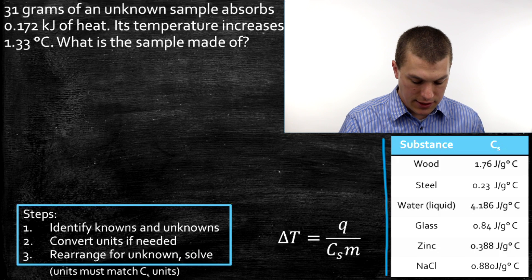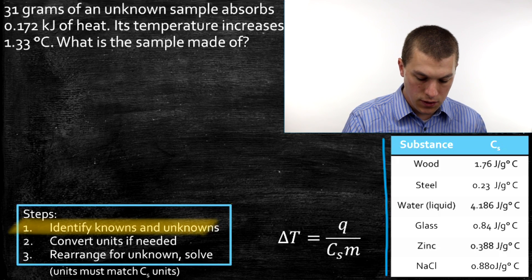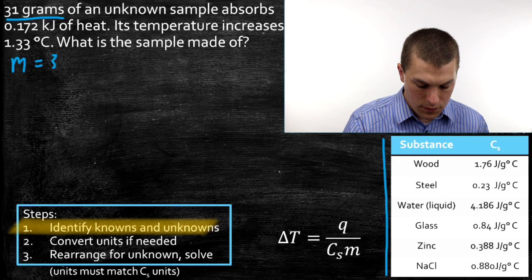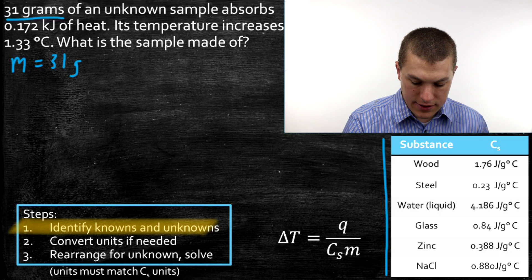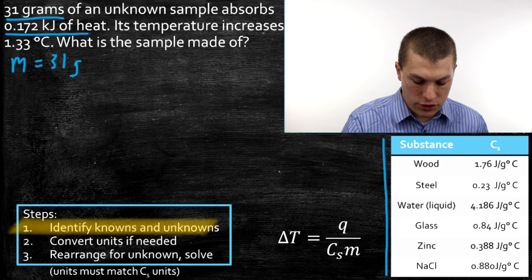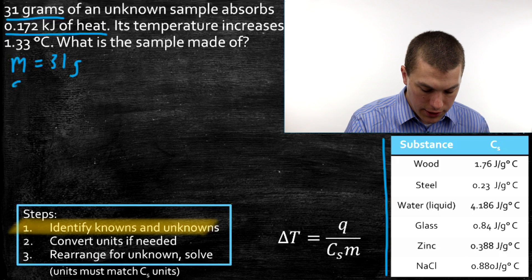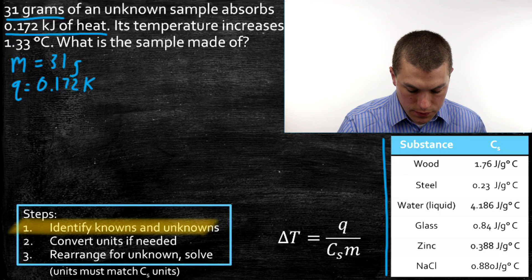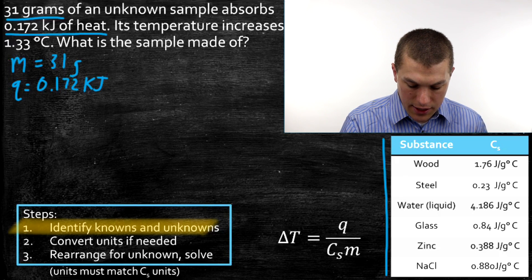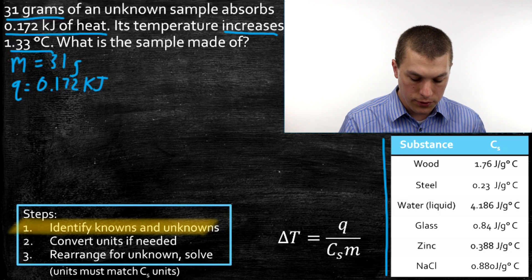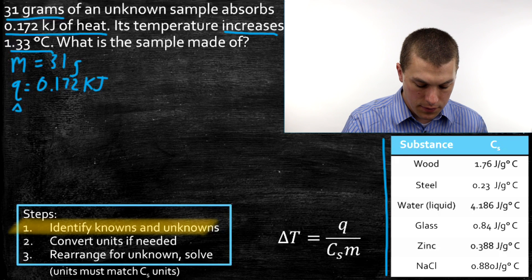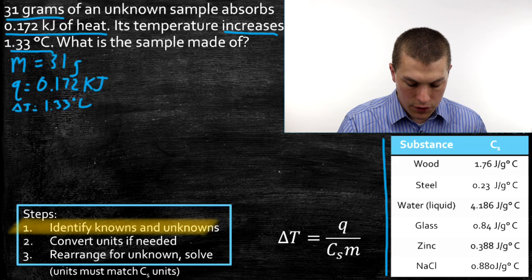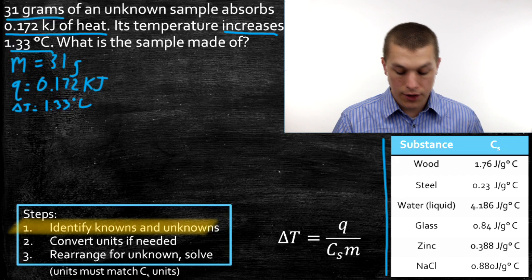So let's go ahead and follow our steps. It says identify the knowns and unknowns. Right away it tells us that our mass is 31 grams. And then it tells us that it absorbs 0.172 kilojoules of heat. So our Q is 0.172 kilojoules. It also tells us that its temperature increases by 1.33 degrees Celsius. So that's a delta T. So that's step one in terms of finding the knowns.